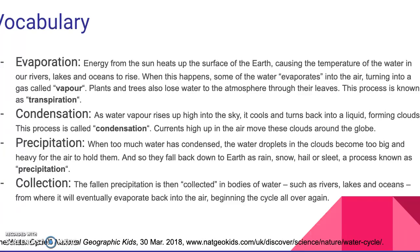Evaporation is when energy from the sun heats up the surface of the earth, causing the temperature of the water in our rivers, lakes, and oceans to rise. When this happens, some of the water evaporates into the air, turning into a gas called vapor. Plants and trees also lose water to the atmosphere through their leaves. This process is known as transpiration.